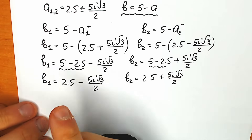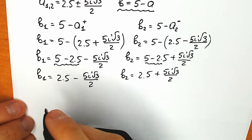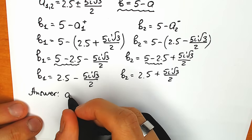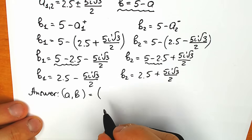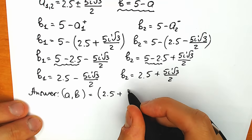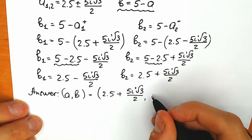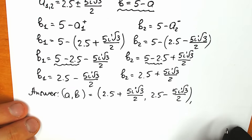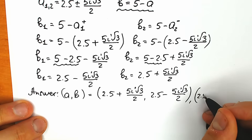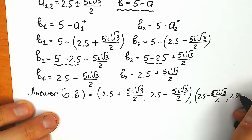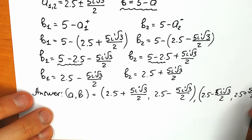So we have our two roots. Our final answer — the (a, b) pairs: the first pair is (2.5 + 5i√3/2, 2.5 − 5i√3/2), and the second pair is (2.5 − 5i√3/2, 2.5 + 5i√3/2).